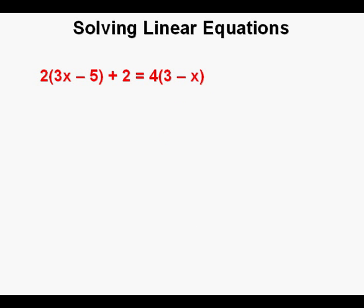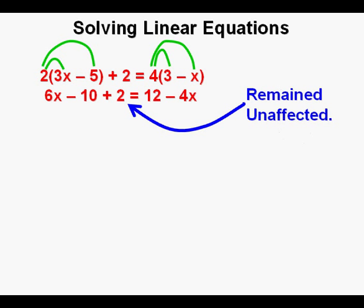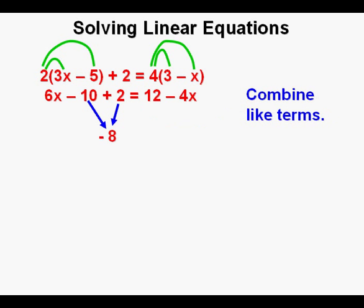Now we'll look at a new problem: 2 times the quantity 3x minus 5 plus 2 equals 4 times the quantity 3 minus x. The first thing we'll do is employ the distributive property of algebra, signified by the green arcs drawn from outside the parentheses to inside. 2 times 3x is 6x; 2 times minus 5 is minus 10. We bring down the plus 2. 4 times 3 equals 12, and 4 times minus x is minus 4x. Note how the plus 2 remained unaffected. Next we can combine like terms on the left side: minus 10 plus 2 becomes minus 8.